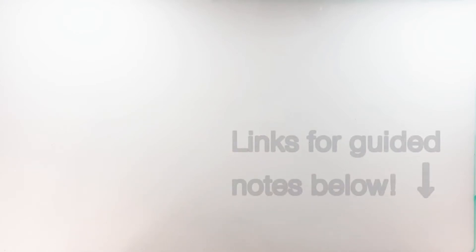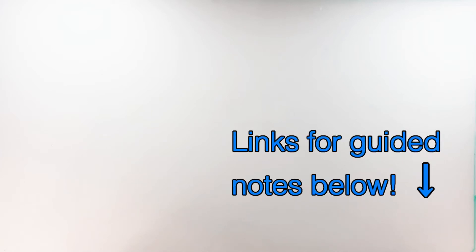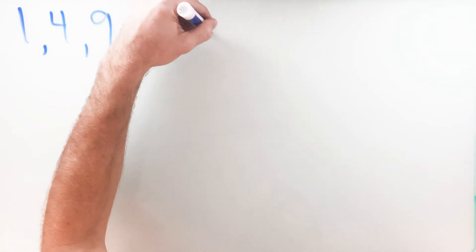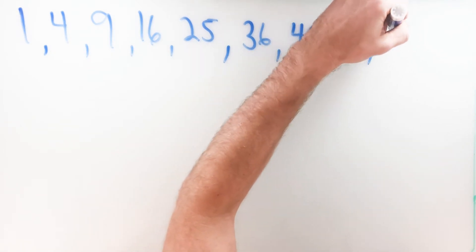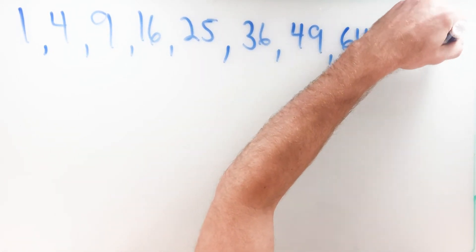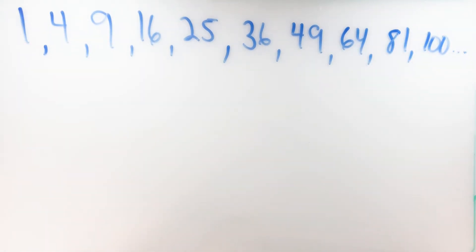Hello, welcome to the Geomestic channel. Today's lesson we're going to talk about what it means to simplify a radical. Before we get into that, I want to back up a little bit and take a look at a number pattern. This pattern may be familiar to you, maybe you've never seen it before. This number pattern right here — 1, 4, 9, 16, 25, 36, 49, 64, 81, 100, and so on — you might recognize this as the first 10 perfect square numbers.